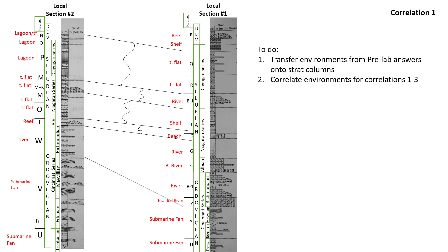The next thing you'll notice is that I grouped all of my rivers together, because rivers are very dynamic environments. It's reasonable to think that the sediment load in a braided river might decrease and it just becomes a regular river. So I group all riverine environments together and connect that series of rivers in location 1 to the river in location 2.